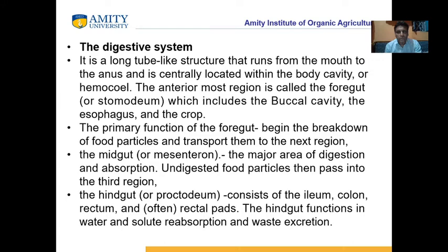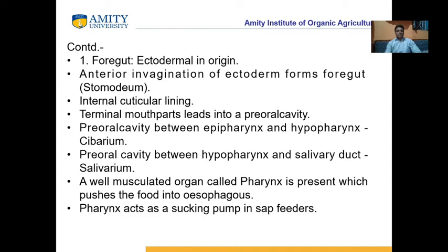The Digestive System of Insects looks like a tube-like structure running from the mouth to the anus. That region is also called foregut or stomodeum. The primary function of the foregut is to begin the breakdown of food materials, and it passes to the midgut or mesenteron. The hindgut is called proctodeum, which consists of ileum, colon, rectum, and rectal pads. The hindgut functions in water and solute reabsorption and waste excretion.